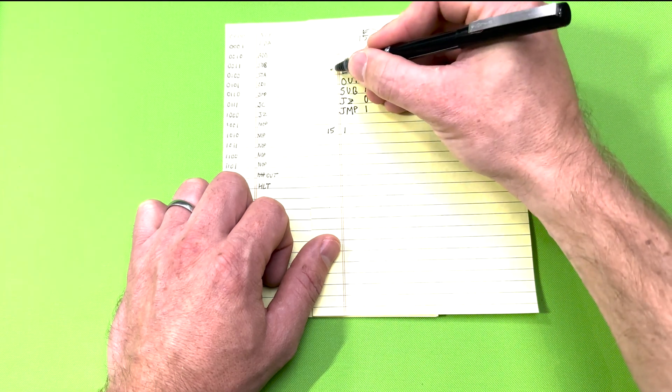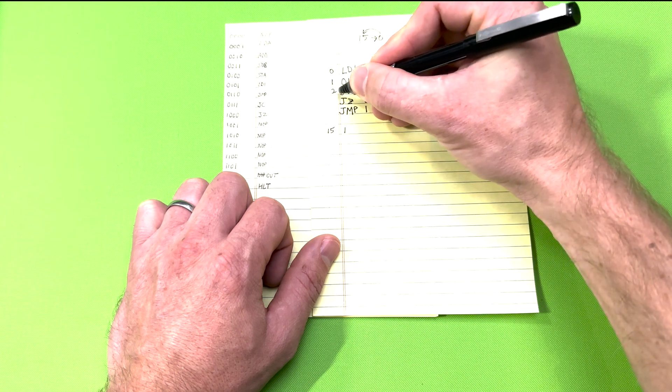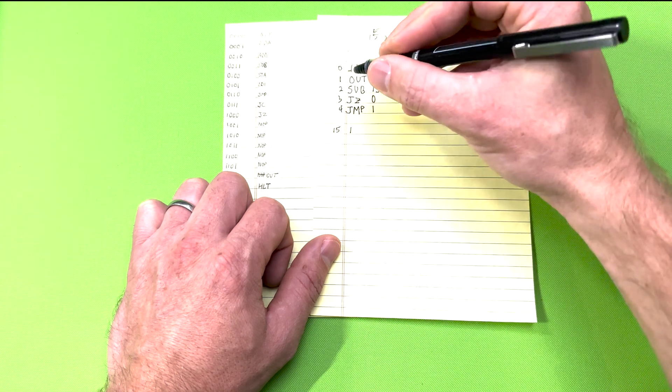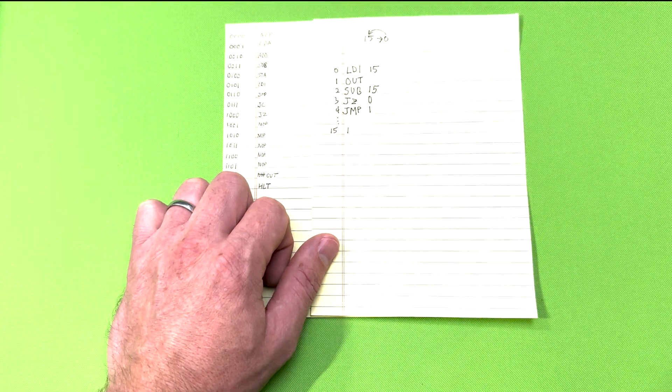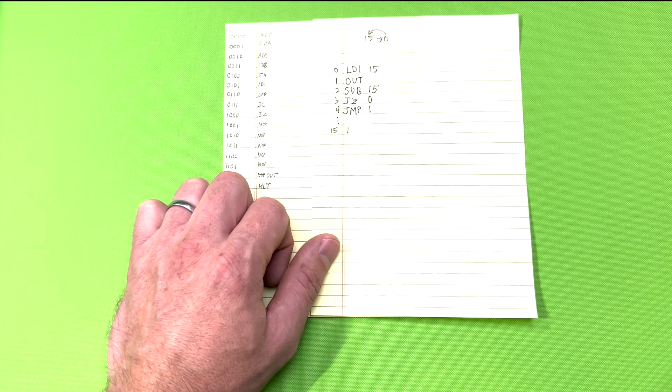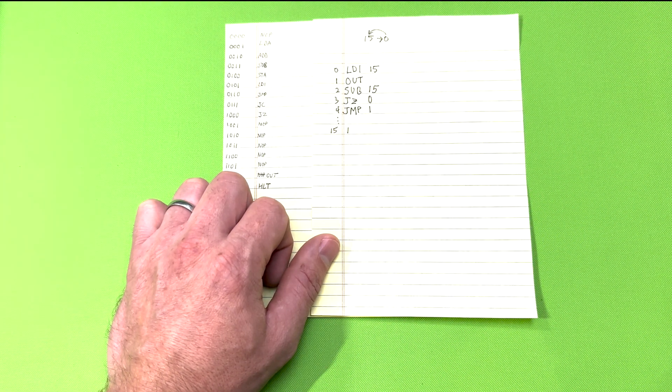Now that we have the assembly code for our program, we need to convert it to machine code to input it into the computer. Let's start off by numbering our instructions starting at zero.